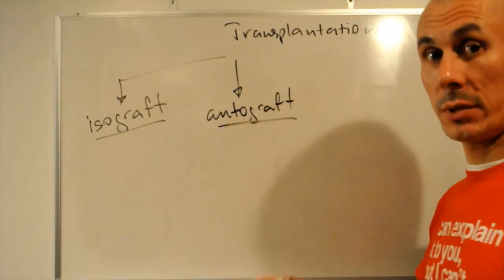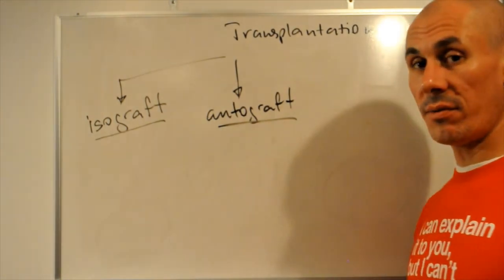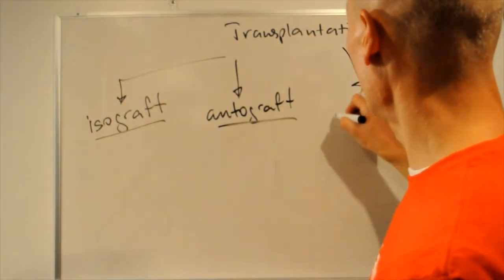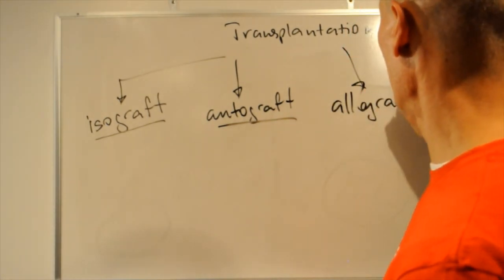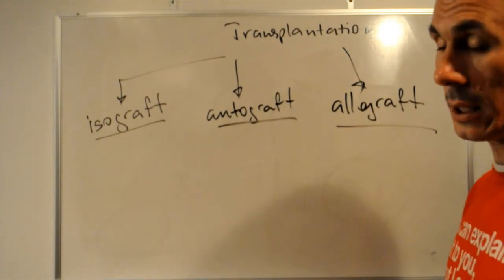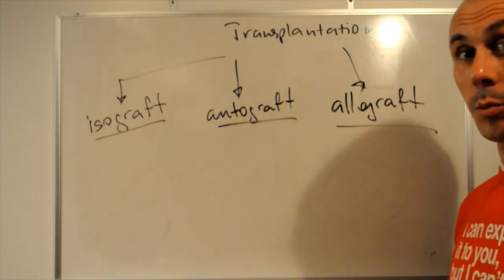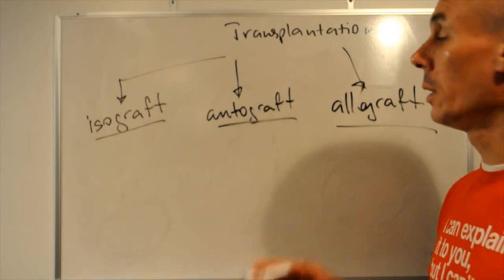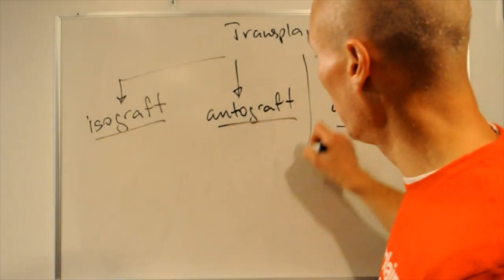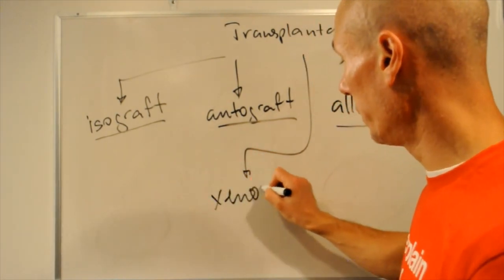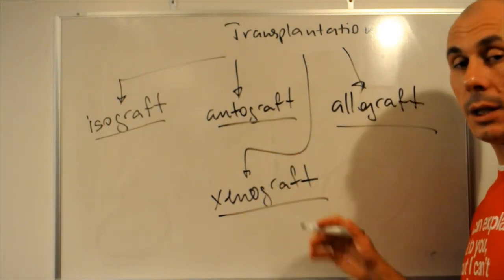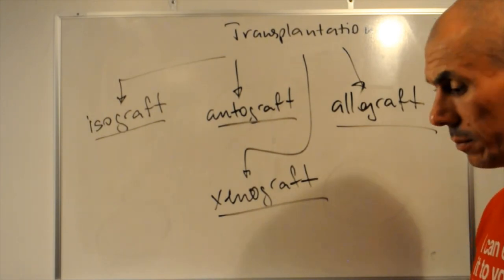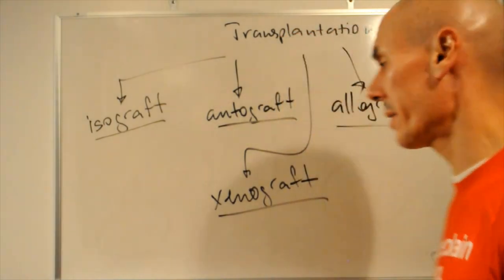Third type is allograft. From human to human, these humans are not identical twins. Even if they are brothers, sisters, mother and father, mother and daughter, father and son. Doesn't matter. Allograft. Complete strangers. Still allograft. And finally, xenograft. Xenograft is the transplant from an animal to a human. Mostly cardiac valves from pigs to humans can be transplanted pretty successfully.